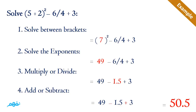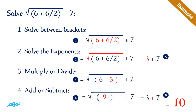We solve 6 divided by 4, which equals 1.5, giving us 49 − 1.5 + 3. The last step: we have both subtraction and addition, which have the same priority. So 49 − 1.5 + 3 equals 50.5.